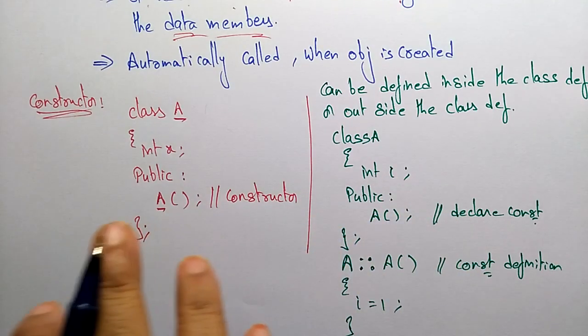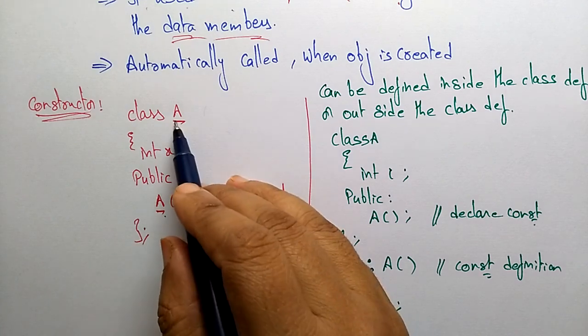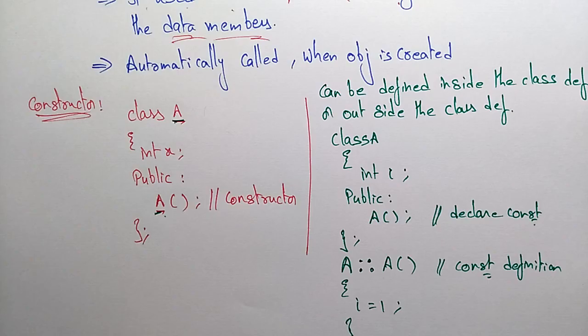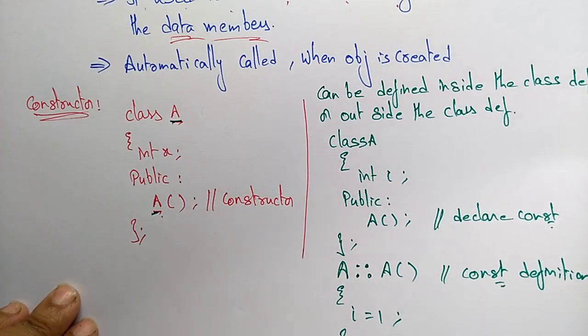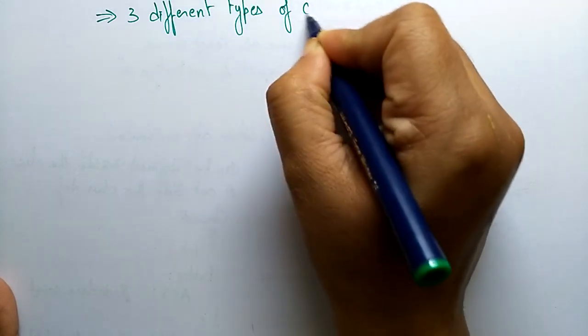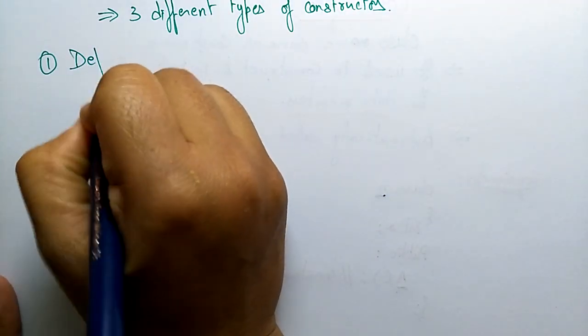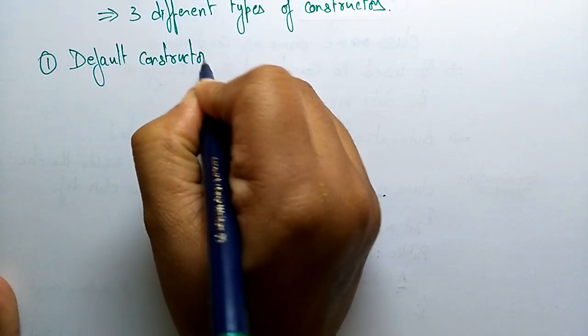So a constructor is just a function — the main specialty is that the class name is the same as the constructor name, and it is automatically called when an object is created. They can have any number of parameters. Now let us see the different types of constructors. There are three different types of constructors.